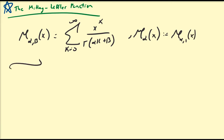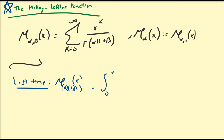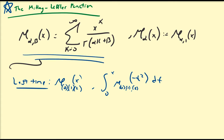In the last video we also explored some particular values and transformations of the Mittag-Leffler function — specifically E_0, E_1, and E_2 evaluated at x, as well as the integral from 0 to x of E_0, E_1, and E_2 of negative t squared dt. In this video we're going to focus on the two-parameter representation of the Mittag-Leffler function, and also briefly talk about its derivatives.